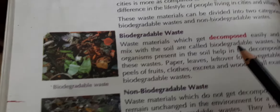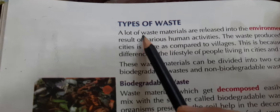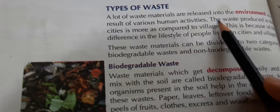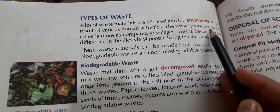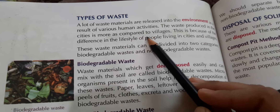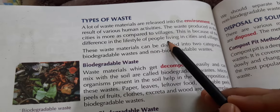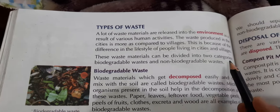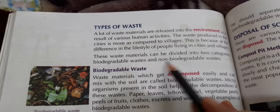Now turn to page 118. Types of waste: a lot of waste materials are released into the environment as a result of various human activities. The waste produced in cities is more compared to villages, because of the difference in the lifestyle of people living in cities and villages. These waste materials can be divided into two categories: biodegradable waste and non-biodegradable waste.